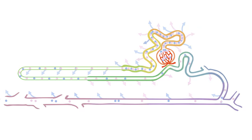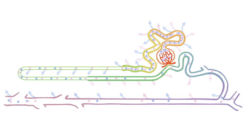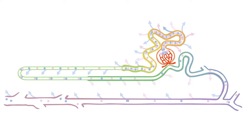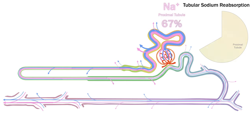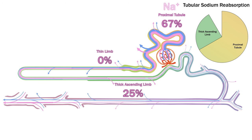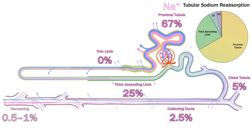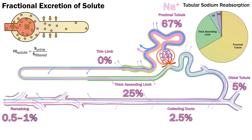To summarise broader principles: most activity happens in the proximal tubule, with about two-thirds of both solute and water reabsorbed together. Water is extracted in the descending loop and solute on the way back up. The fluid is maximally diluted by the thick ascending limb and distal tubule through solute removal, then concentrated as needed in the collecting ducts by water reabsorption. For sodium specifically: two-thirds in the proximal tubule, nothing in the thin limb, a quarter in the thick ascending limb, 5% in the distal tubule, and about 2.5% in the collecting ducts — leaving a fractional excretion of sodium of about 0.8%.